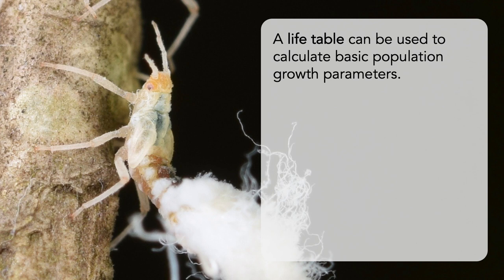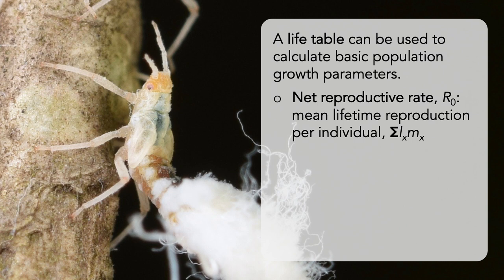A life table can be used to calculate basic population growth parameters. Net reproductive rate, or R0, is the mean lifetime reproduction per individual, calculated as the sum of the entries in the LXMX column. An R0 of 1 indicates perfect replacement — each individual, on average, contributes a single offspring to the next generation, so the population is likely to neither grow nor decline. In contrast, higher values of R0 would be associated with greater rates of population growth.